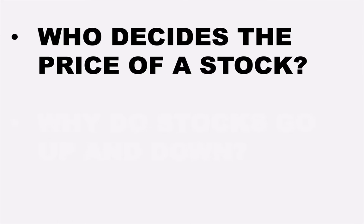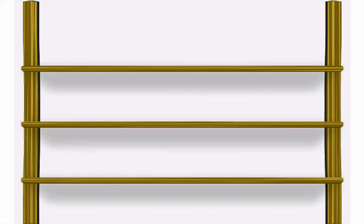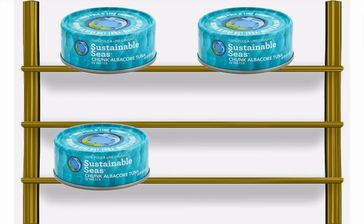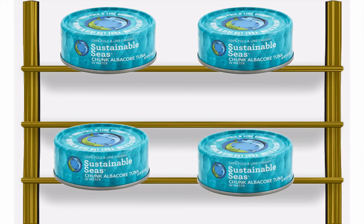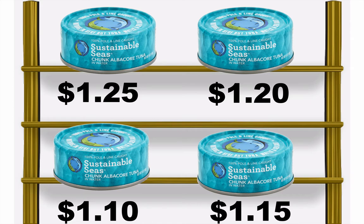Let's start with who decides the price of a stock. Stock prices themselves are somewhat of a natural and automatic process. There is not necessarily someone sitting there determining what each stock price will be worth. I pulled an interesting analogy from a Quora article: imagine there's an empty store, and a bunch of sellers come in selling tuna. They're basically selling the same type of tuna, and they each have an idea of what value they want to sell it for. These companies each have their own reasons for setting this price.